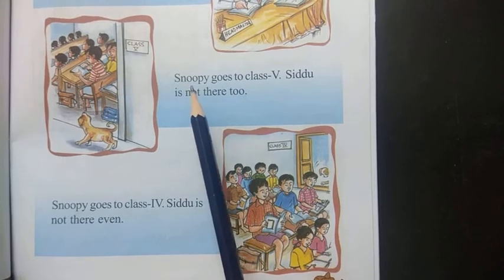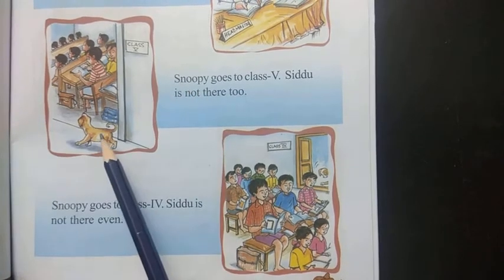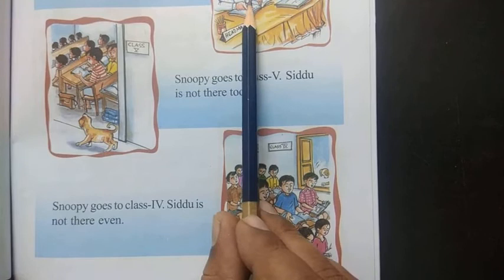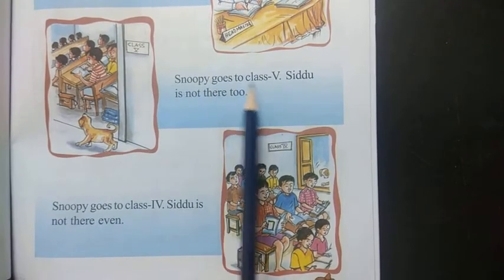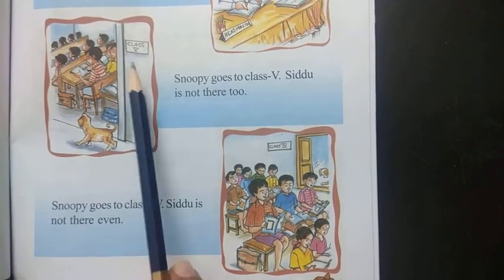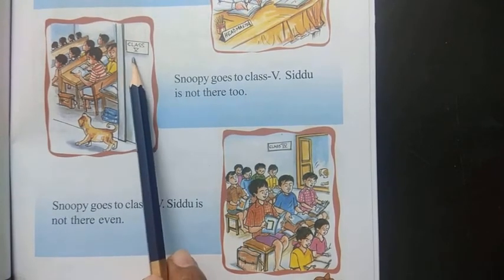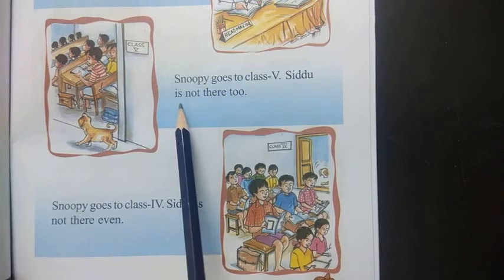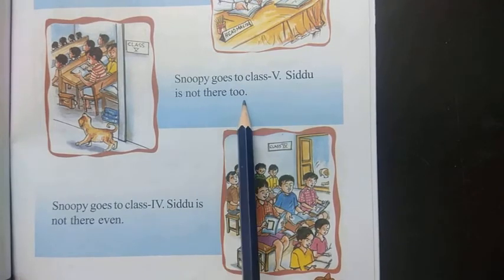First Snoopy goes to the headmaster's room, then after to class 5. Siddhu is not there too.